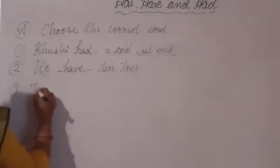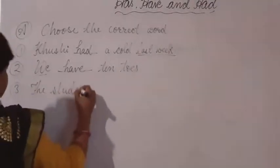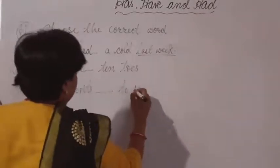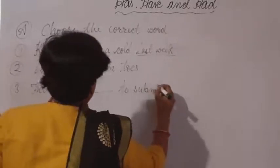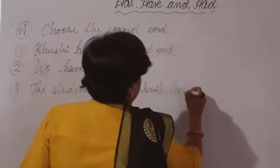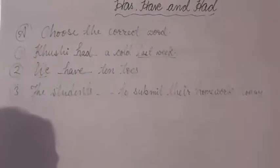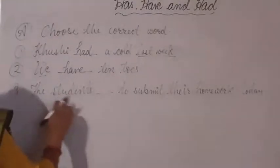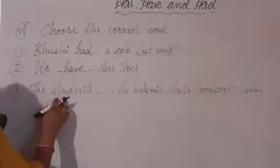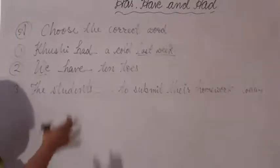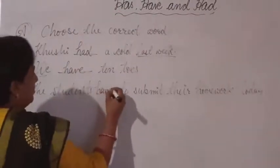Third: 'Students have to submit their homework today.' Today indicates present tense, so we choose from has or have. The subject is students, which is plural, so we write have here.